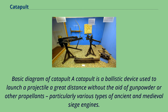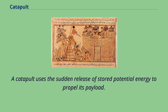A catapult is a ballistic device used to launch a projectile a great distance without the aid of gunpowder or other propellants, particularly various types of ancient and medieval siege engines. A catapult uses the sudden release of stored potential energy to propel its payload.